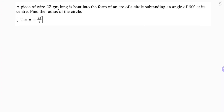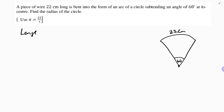A piece of wire 22 centimeters long is bent in the form of an arc of a circle, subtending an angle of 60 degrees at its center. Find the radius. So here, the length of the arc is 22 centimeters.